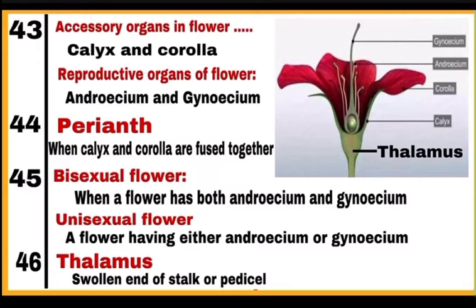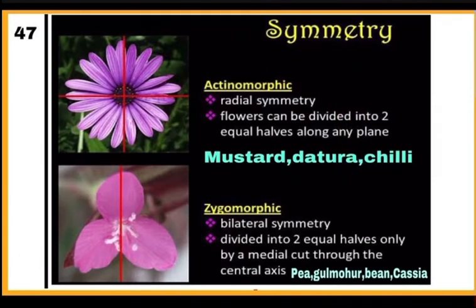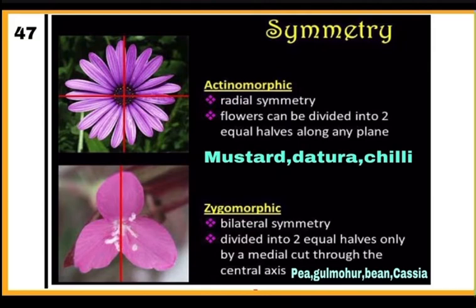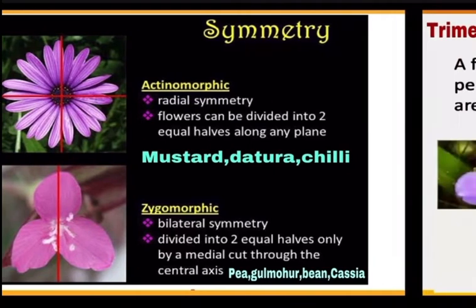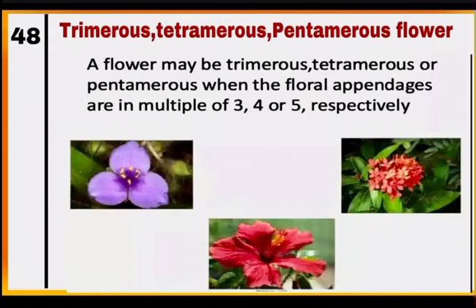Thalamus: the swollen end of the stalk or pedicel. Actinomorphic symmetry: flower is radially symmetrical and can be divided into two equal halves along any plane — examples are mustard, Datura and chilli. Zygomorphic flowers: have bilateral symmetry and can be divided into two equal halves only by a medial cut through the central axis, as in pea, Gynandropsis and Cassia. Trimerous, tetramerous and pentamerous flowers: a flower is trimerous, tetramerous or pentamerous when floral appendages are in multiples of three, four or five respectively.